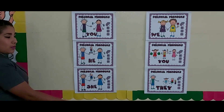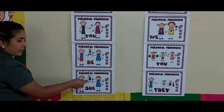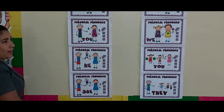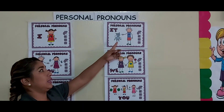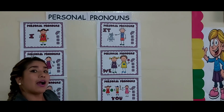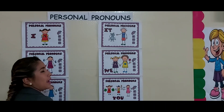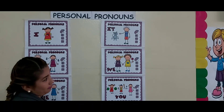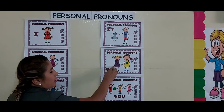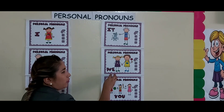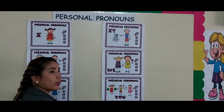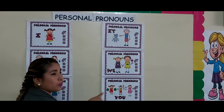We use she for a woman or a girl. Nosotros utilizamos she para una mujer o una chica. We use it for an animal or a thing — for example, a ruler, una regla. We use we for a group of people and you. Nosotros utilizamos we para un grupo de personas y tú. En este grupo de personas tú también te encuentras.